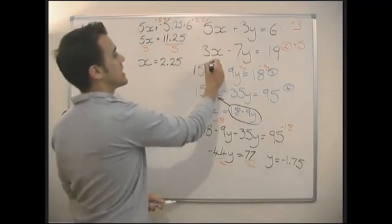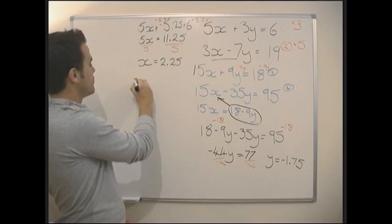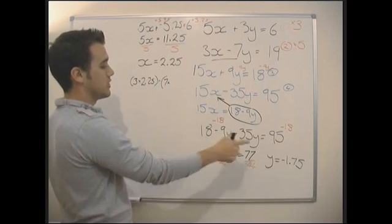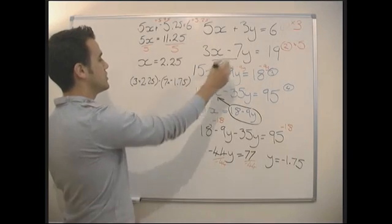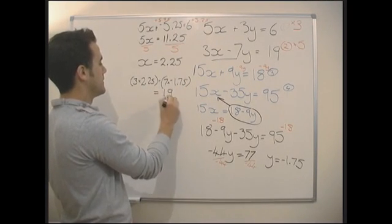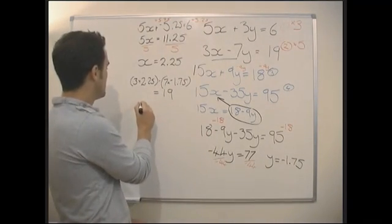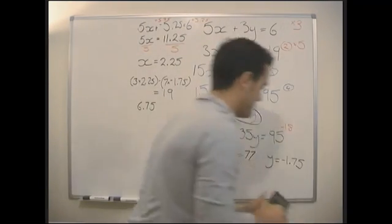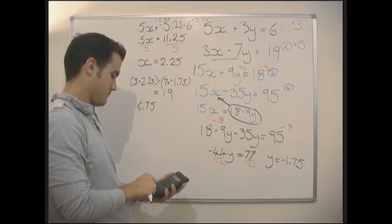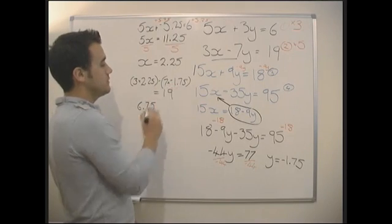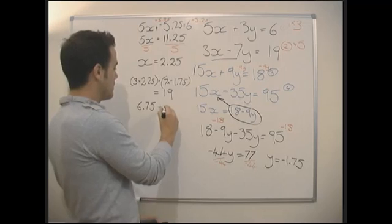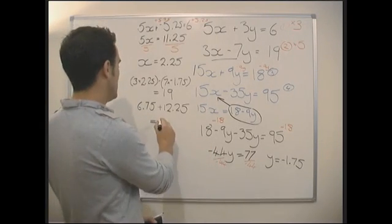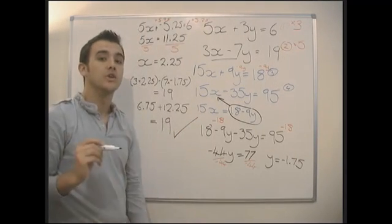Again, let's just check that out. Let's check it works in here. So 3 times 2.25 minus 7 times by minus 1.75. And that should equal 19. Let's see what it does equal. 3 times 2.25, it's going to give us 6.75. 7 times minus 1.75, it's going to give us 12.25. Minus minus, it's going to give us a plus, isn't it? So plus 12.25. Well, 6.75 add 12.25, thankfully, it's 19. We're going to give ourselves a big fat tick. We know we got that question right.